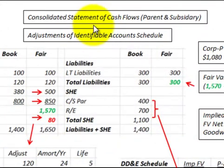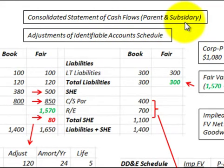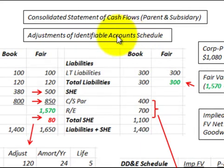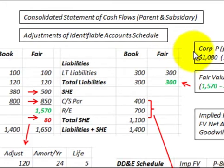We are going to be looking at a consolidated statement of cash flows between a parent and a subsidiary company. We are specifically going to be looking at adjustments of an identifiable account schedule — how we would set this schedule up and how we would use it. Let's go look at our example.